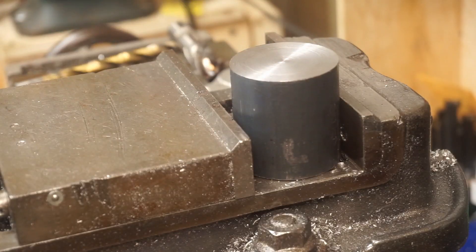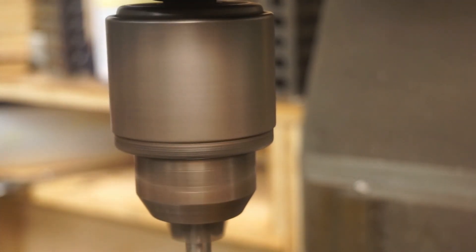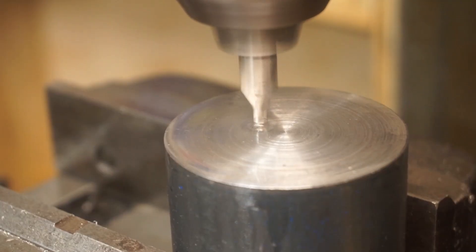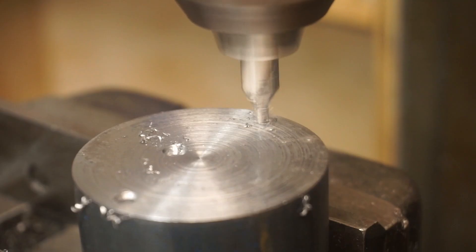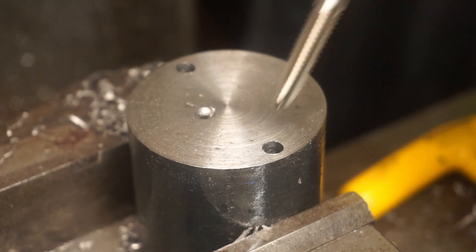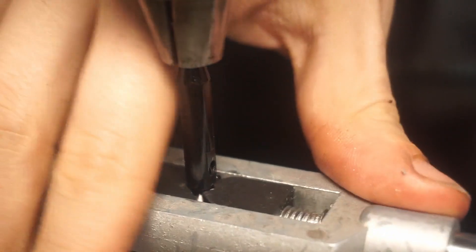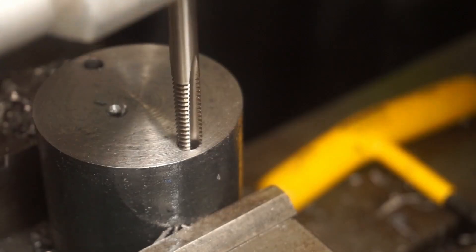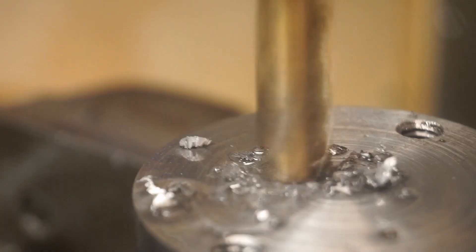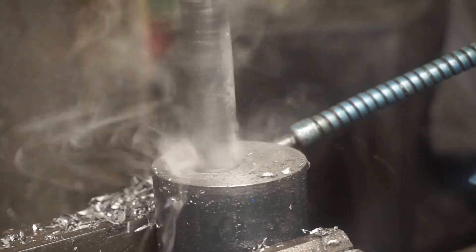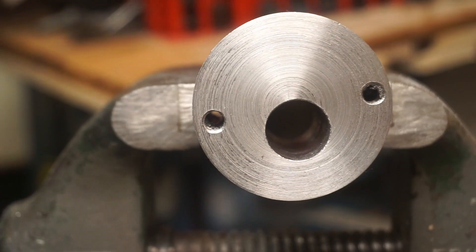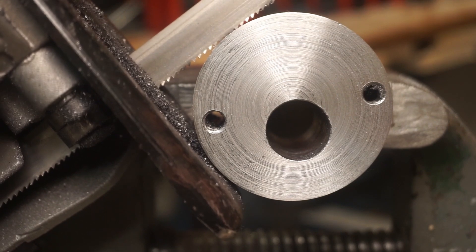The eccentric pieces start life as some two-inch steel round. After squaring the ends, I'll mark out the features. The outer two holes need to be enlarged and tapped. The inner offset hole will become the eccentric center bore. Now, I'll split the piece in half. Each half will become a separate eccentric piece.